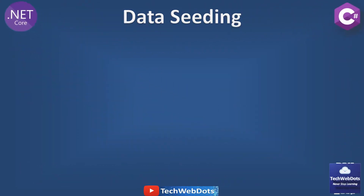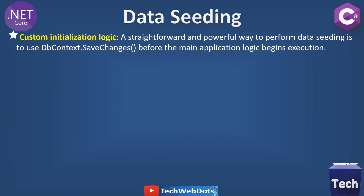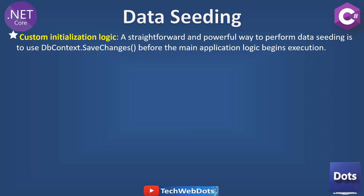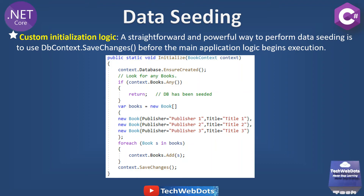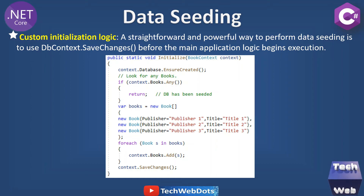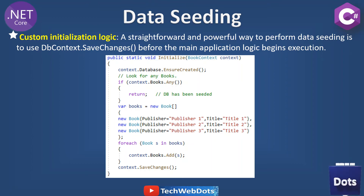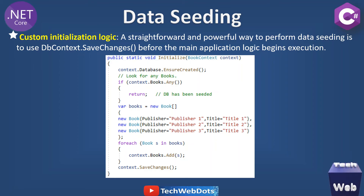The next type is custom initialization logic — a straightforward and powerful way to perform data seeding. We use DbContext SaveChanges before the main application logic begins execution. We have created an Initialize method in which we are passing the context and creating a new array of book objects. At the end we are adding those books to the context and calling SaveChanges. This piece of code will auto-generate data in the database. Let's switch to Visual Studio to implement this.